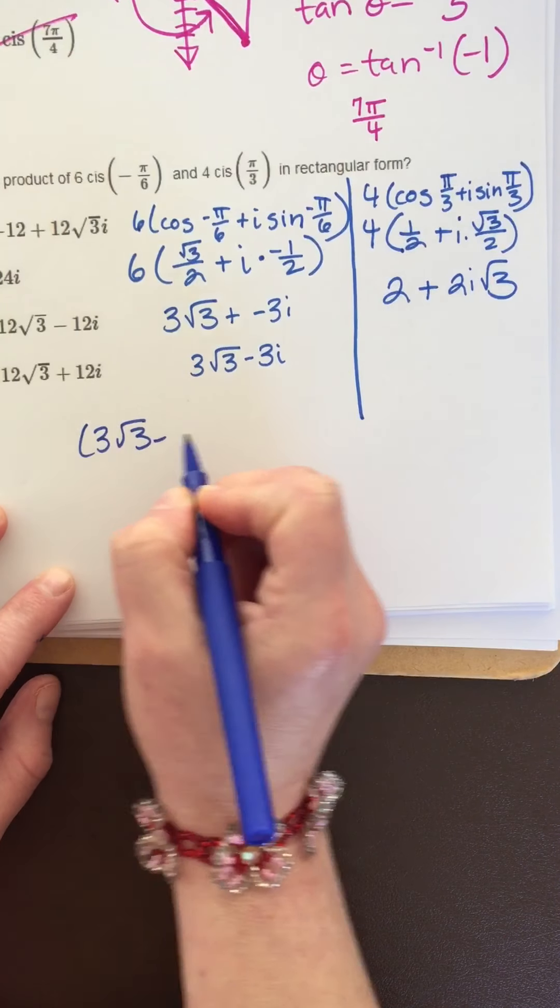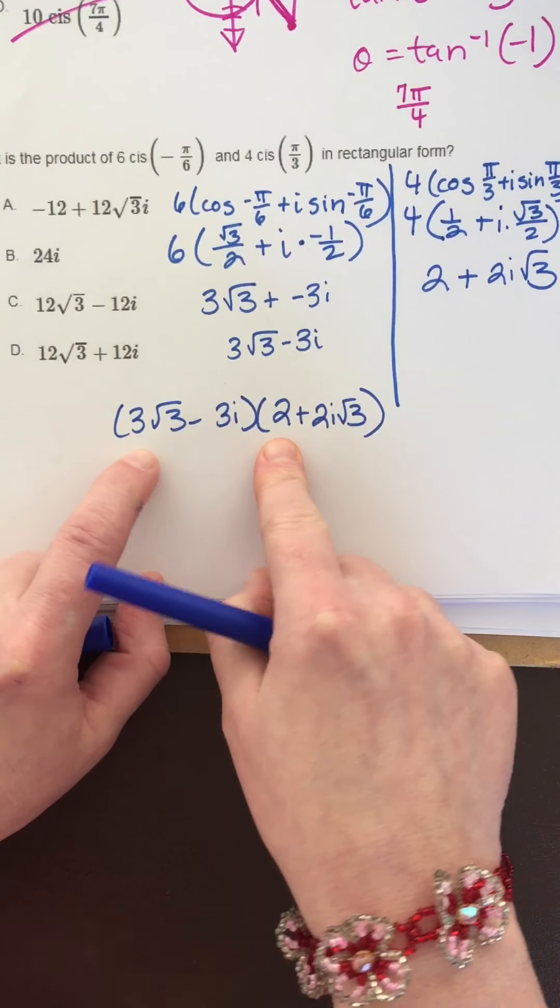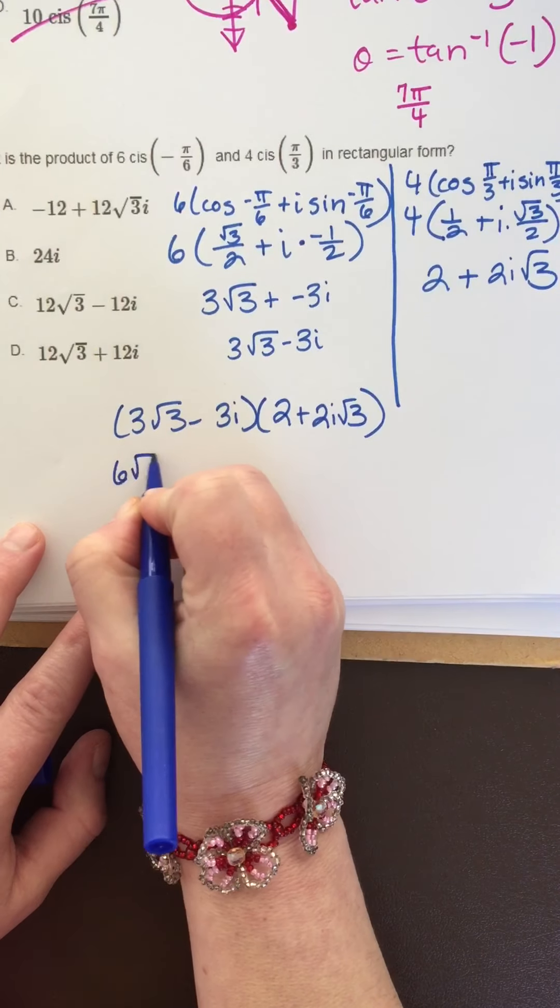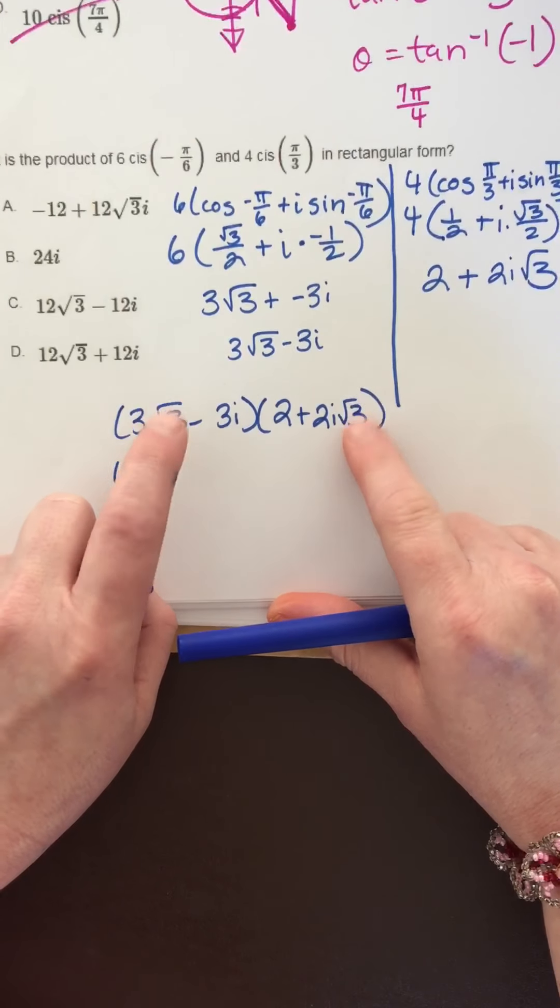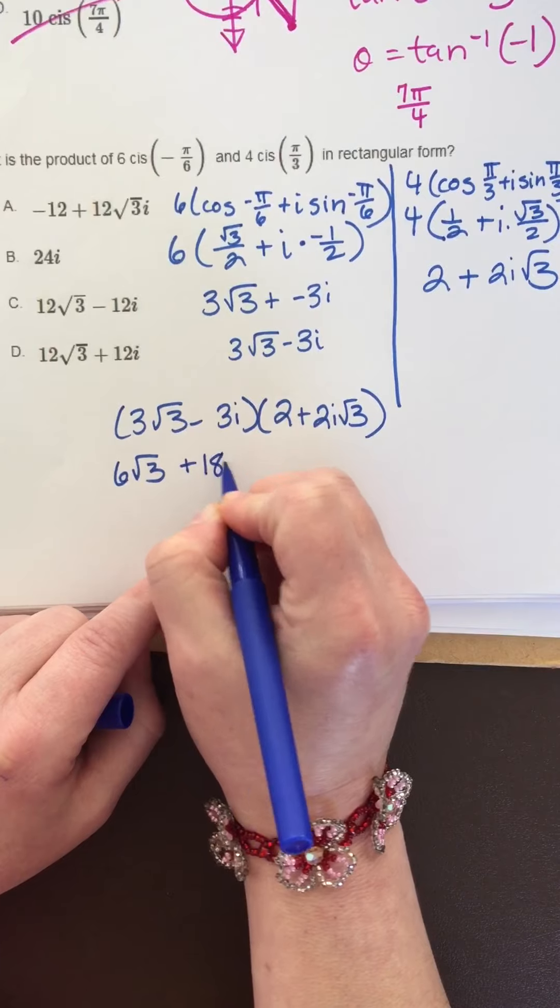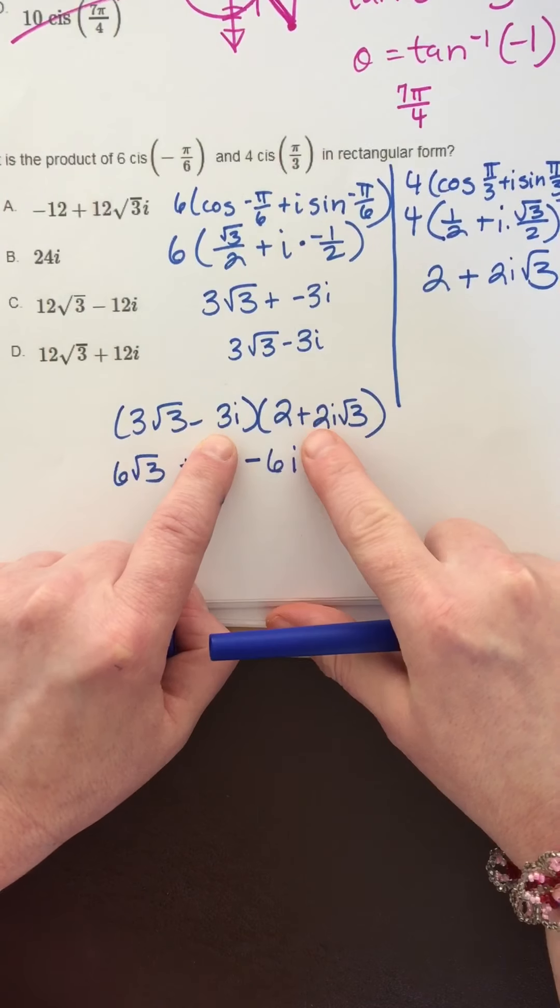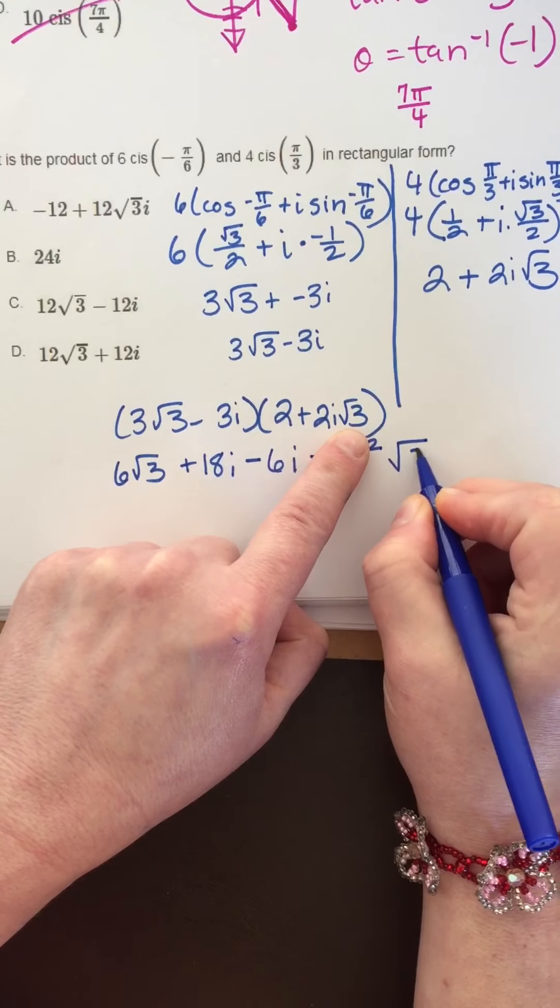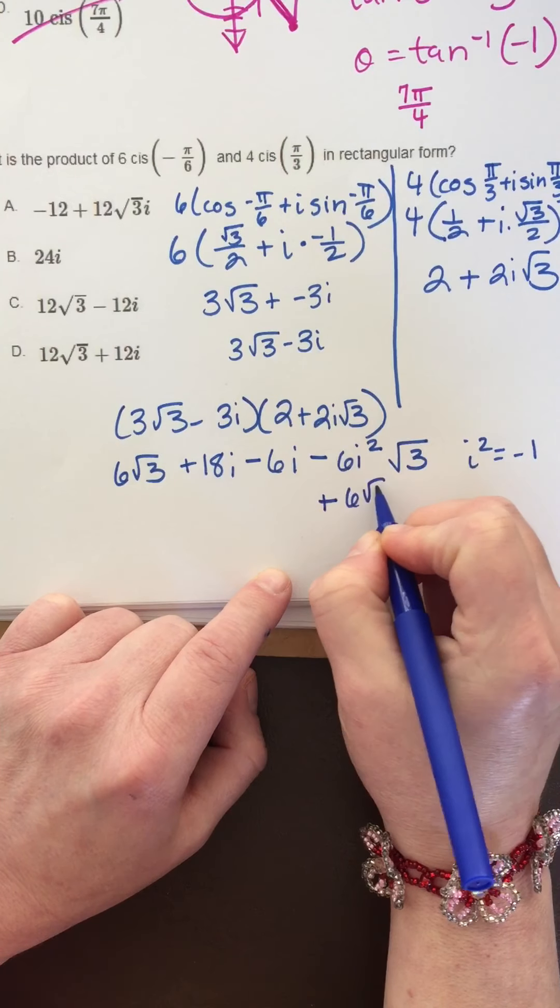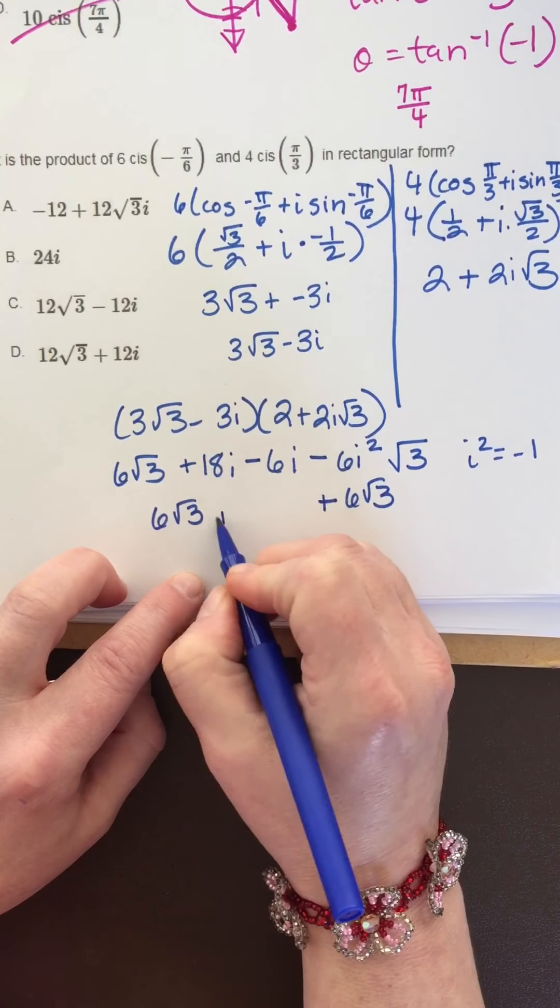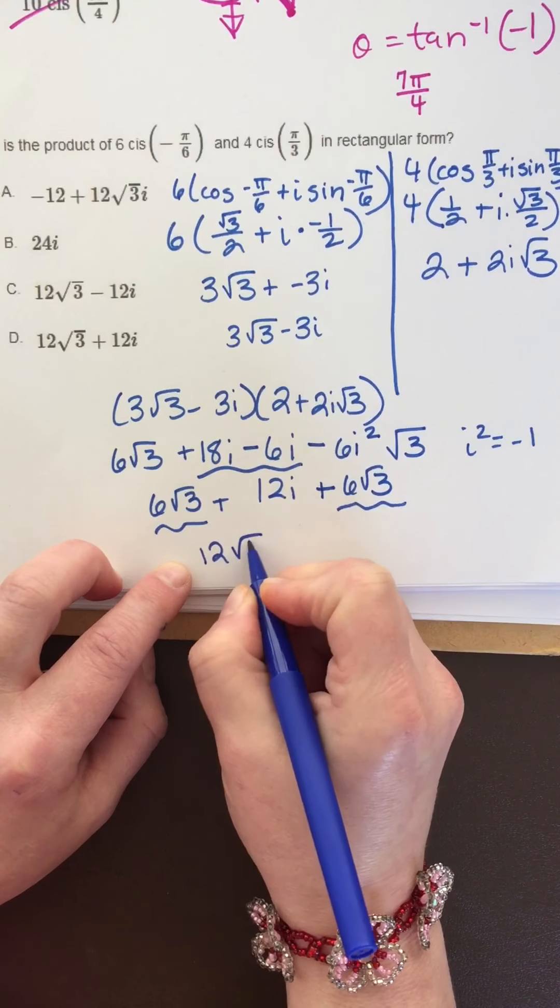We got 3 square root of 3 minus 3i times 2 plus 2i square root of 3. When I multiply, first 3 times square root of 3 times 2 is 6 square root of 3. Outer, 2i times square root of 3 times square root of 3 is 3, so 6i times 3 is 18i. Inner, negative 3i times 2 is negative 6i. Last, 3i times 2i is 6i squared times square root of 3. i squared equals negative 1, so these negatives become positive, 6 square root of 3. Put these together: 18 minus 6i is 12i. That would be 12 square root of 3 plus 12i.